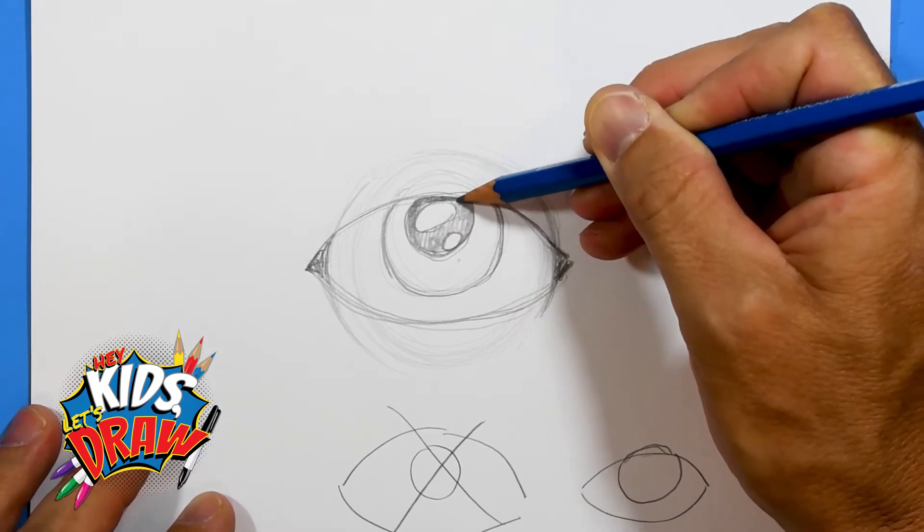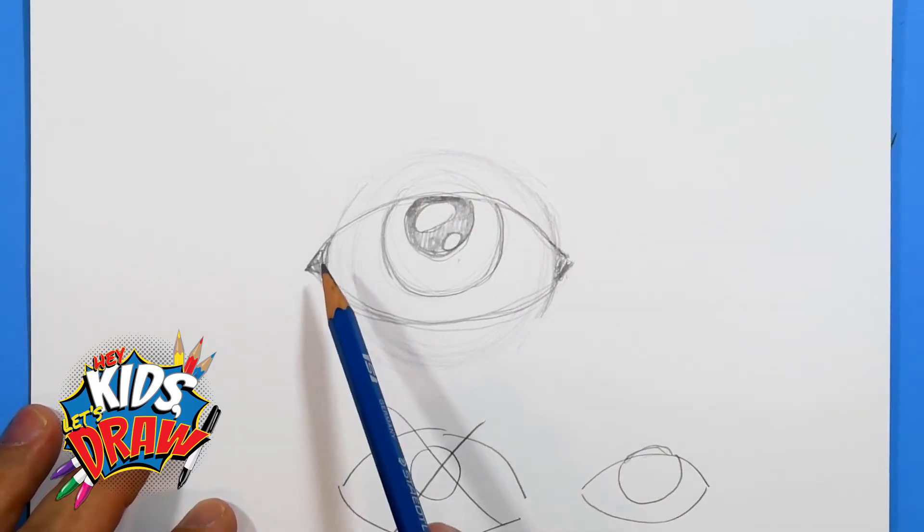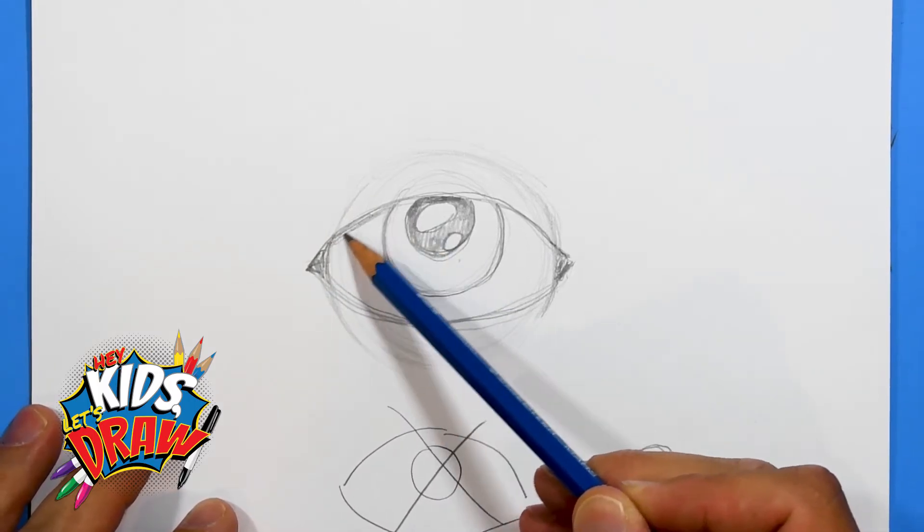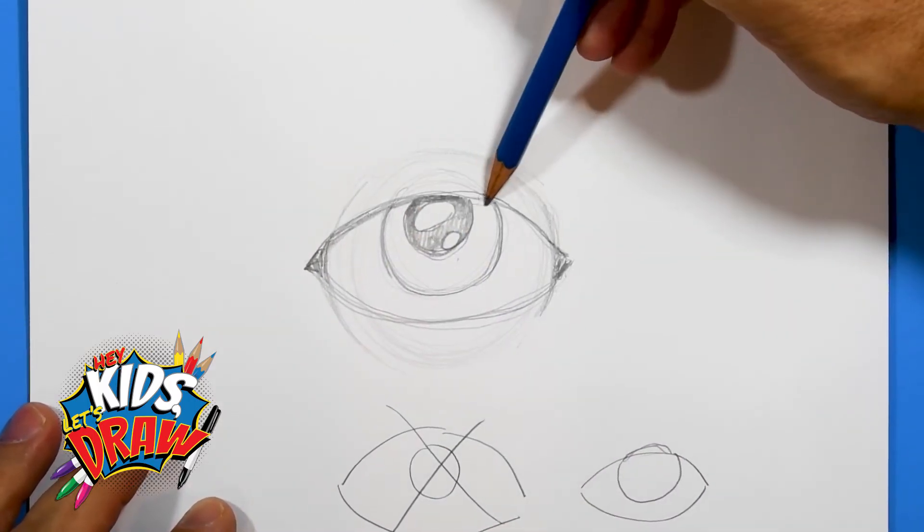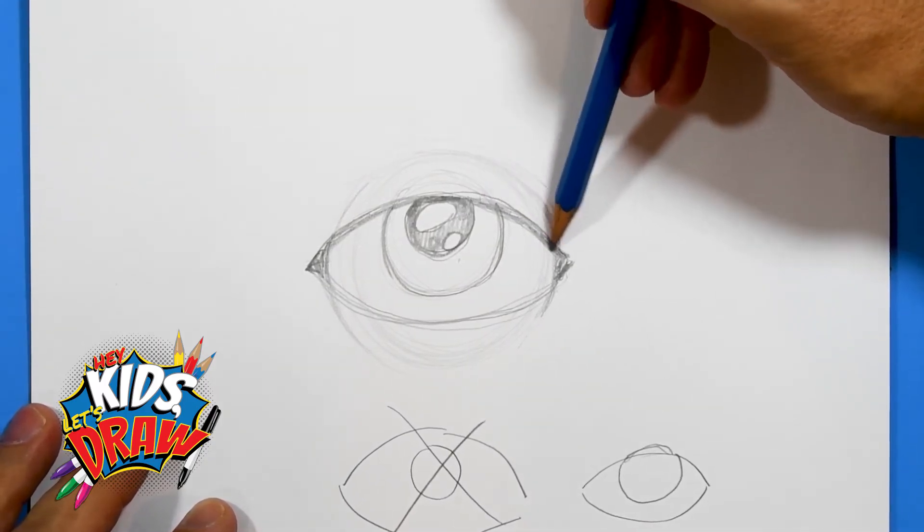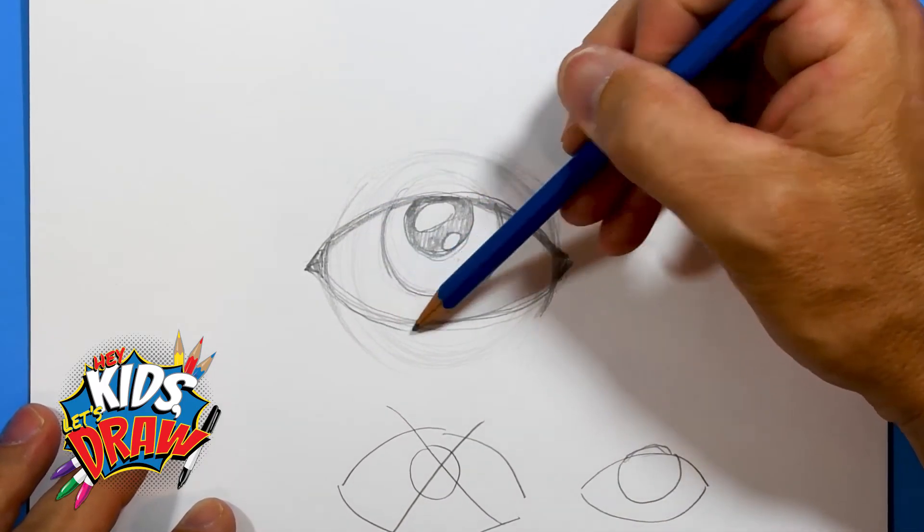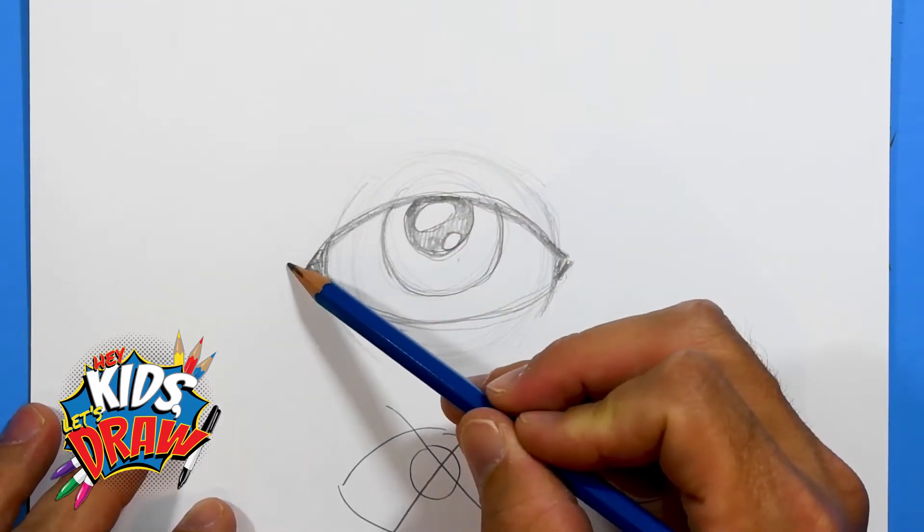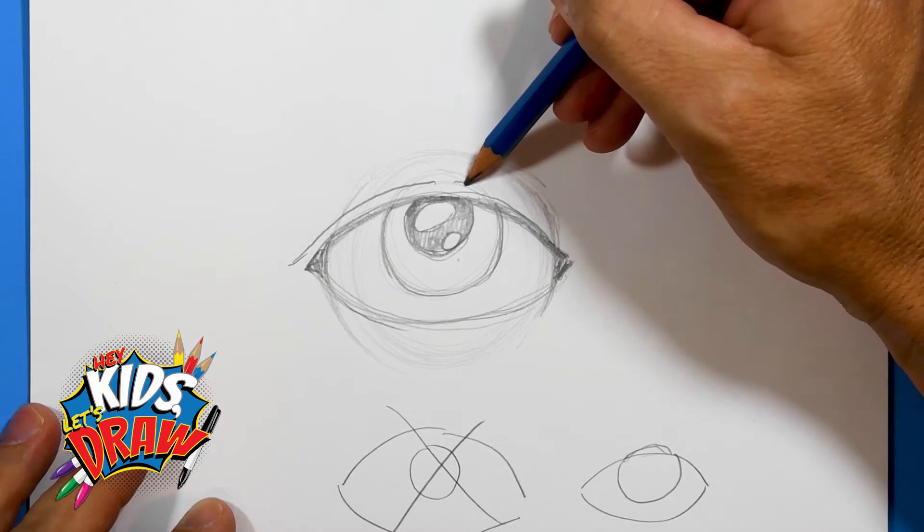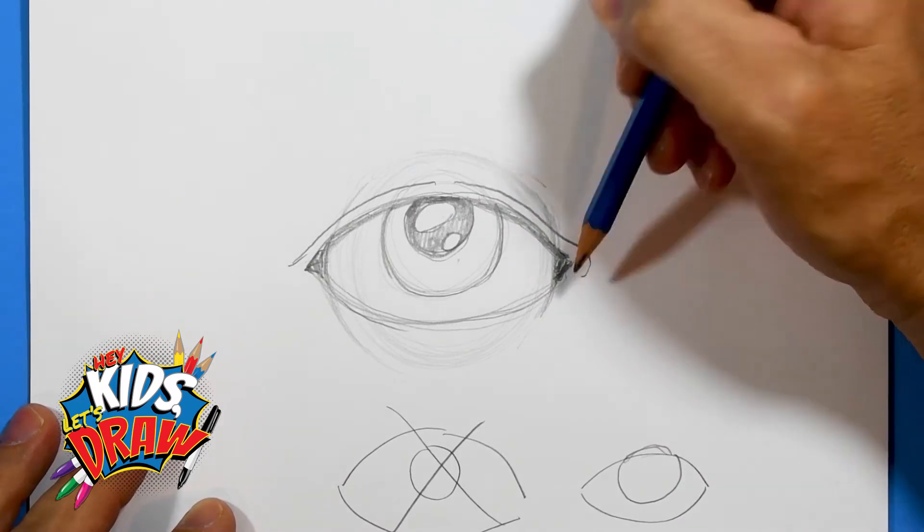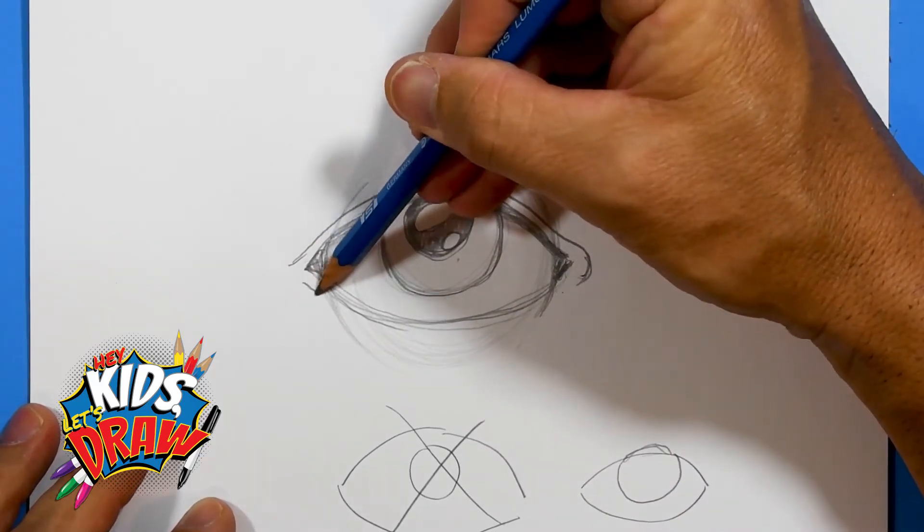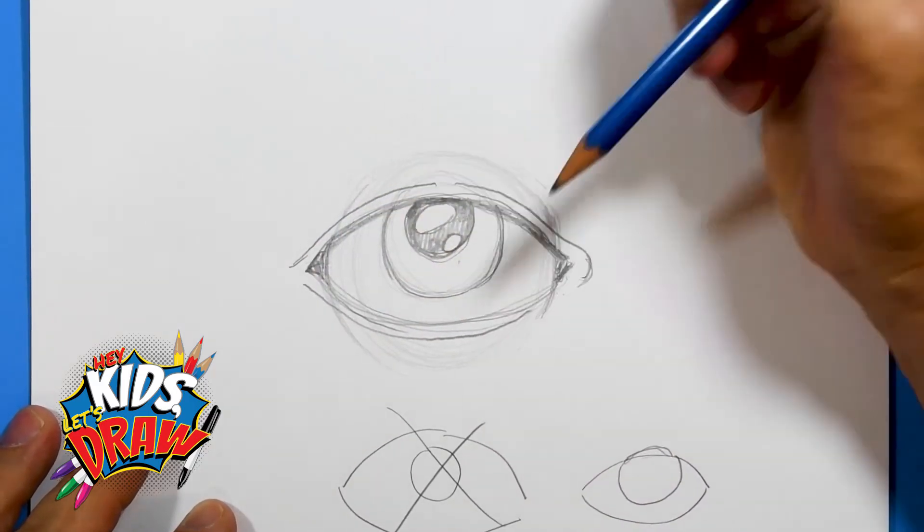As the eyelid sits over your eye, the top of the eye right here is gonna be shadowed, it's gonna be darker. So you can draw it darker. The skin of the eyelid kind of follows the shape of the eye and curves around. Right here the bottom eyelid, same thing, curves around.